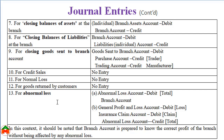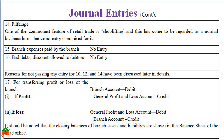It should be noted that the branch account is prepared to know the correct profit of the branch without being affected by any abnormal loss. Whenever there is a bill receivable, there should be no entry. For branch expenses paid by the branch there is no entry, and for bad debts and discount allowed to debtors there should be no entry — the reasons will be discussed later. If there is a profit from the branch, that profit should be credited and the branch account should be debited.